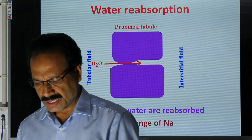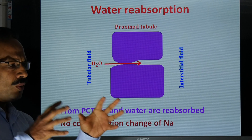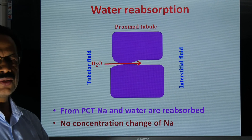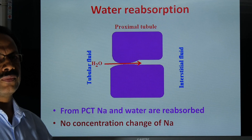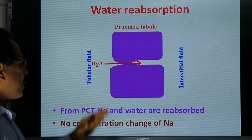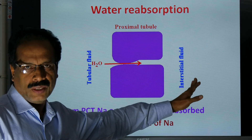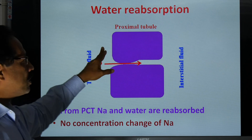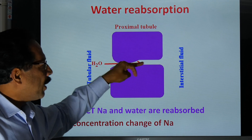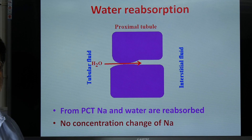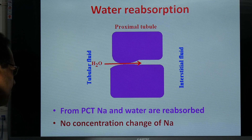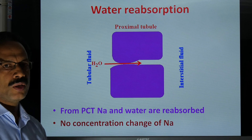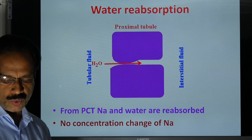Regarding water reabsorption: glucose, amino acids, and sodium are reabsorbed, changing the concentration of fluid in the tubular lumen. The concentration of water increases — a lot of water, less amount of solute. As a result, the concentration of water is high in the tubular fluid compared to the interstitial fluid, making water move by osmosis into the interstitial fluid by two routes: transcellular, passing through the cell, and paracellular, through the space between cells. Even though water and sodium are reabsorbed, the concentration of sodium and water in the fluid does not change because they are reabsorbed in the same proportion.